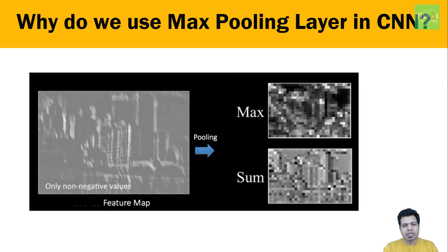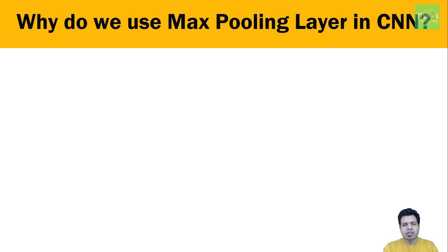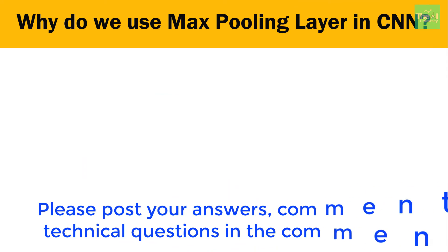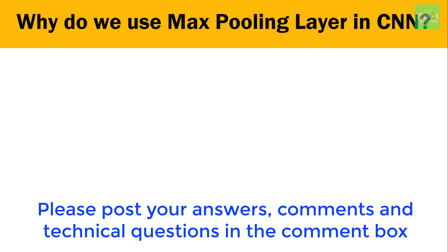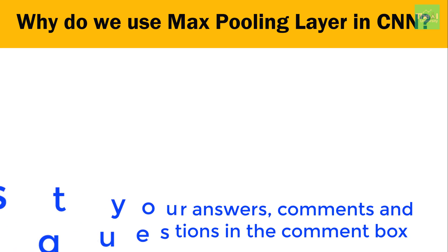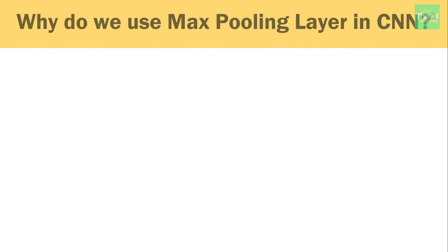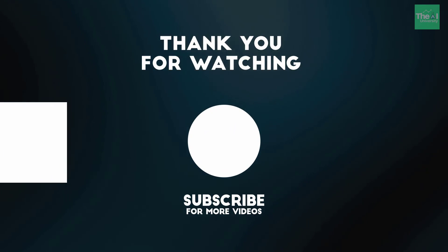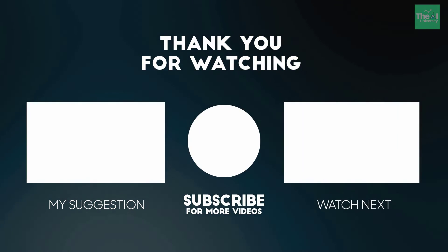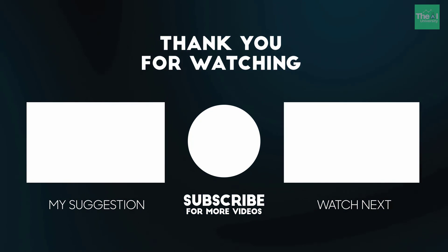So folks, that's it for this video. In the upcoming videos I will cover explanations of various other layers of convolutional neural networks before we develop image recognition and object detection projects. Today's question: what are the three types of pooling operations explained in the video? Please post your answers in the comment section. You can also post technical questions and I will try to answer them. If you haven't subscribed yet, click the subscribe button and the bell icon to receive notifications whenever I release a new video. Thanks for watching!